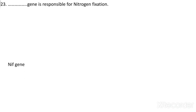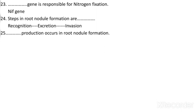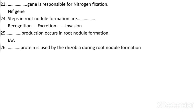Which gene is responsible for nitrogen fixation? The NIF gene is responsible. What are the steps in root nodule formation? The first step is recognition, the second is excretion, and the third is invasion. Recognition means the plant and bacterium recognize each other and attach via root hairs. Excretion refers to the excretion of Nod factors by the bacterium and the invasion of root hairs through the formation of an infection thread. What production occurs in root nodule formation? Indole acetic acid production occurs. Which proteins are used by Rhizobium during root nodule formation? Rhicadhesin and lectins are the two proteins used.